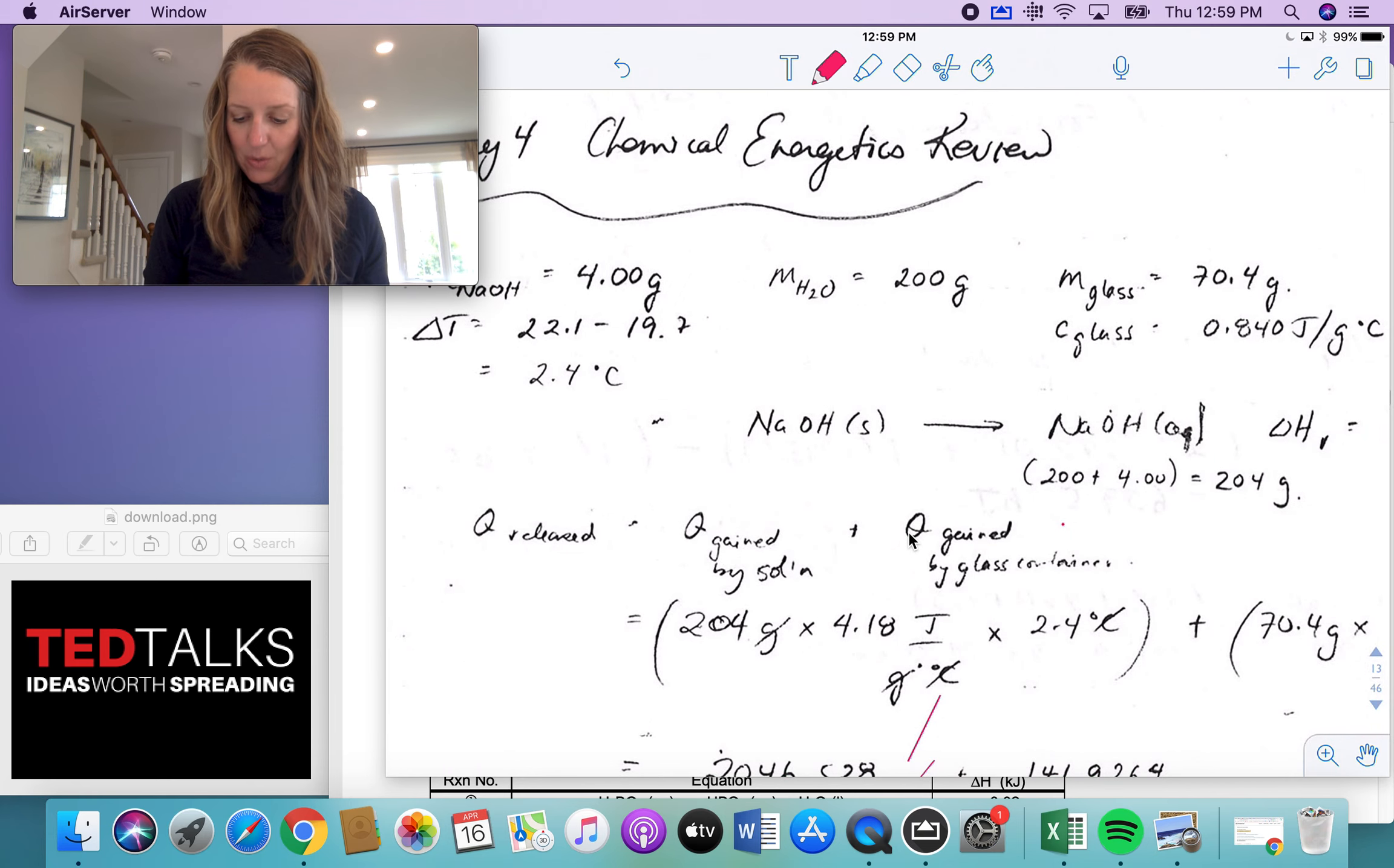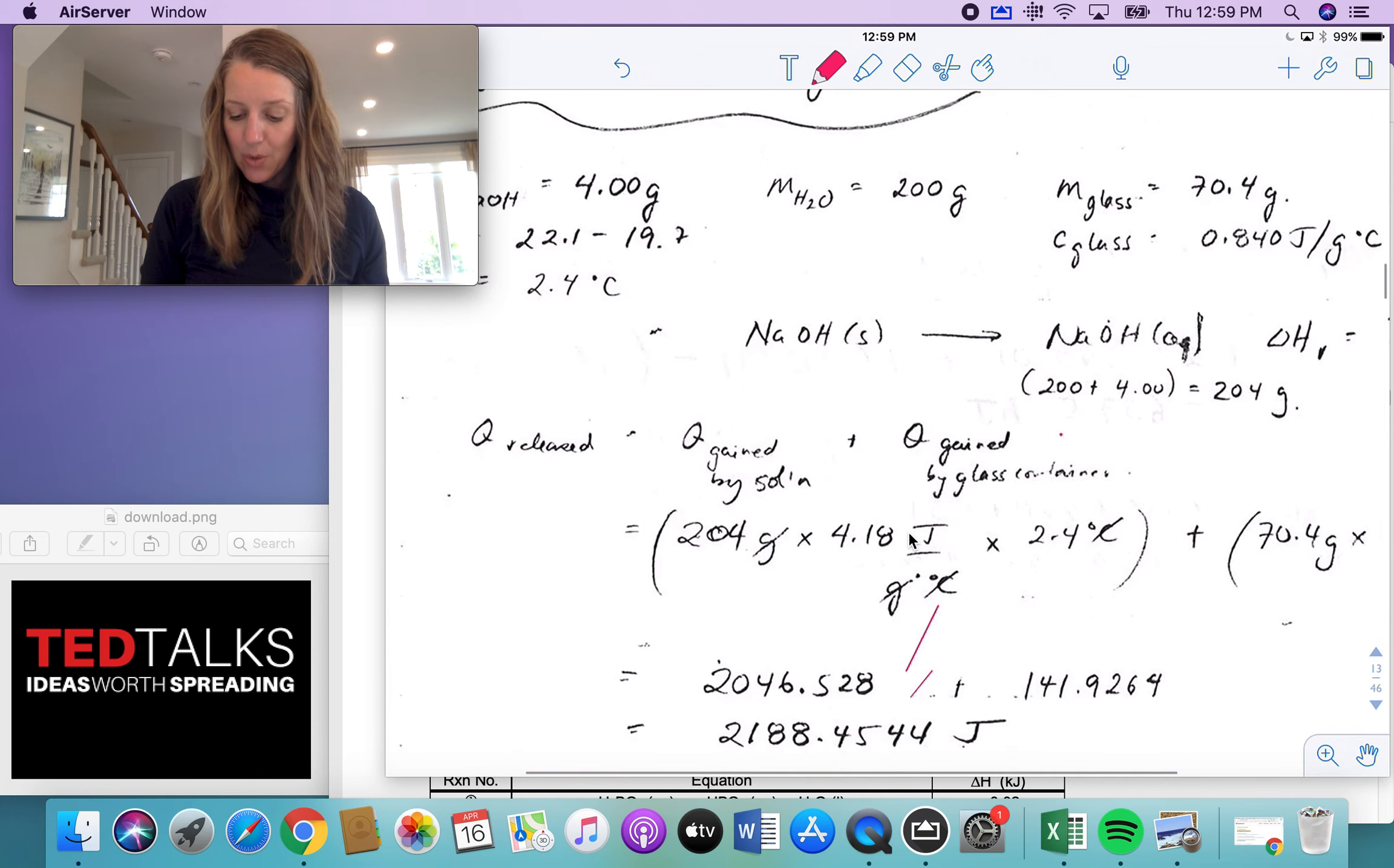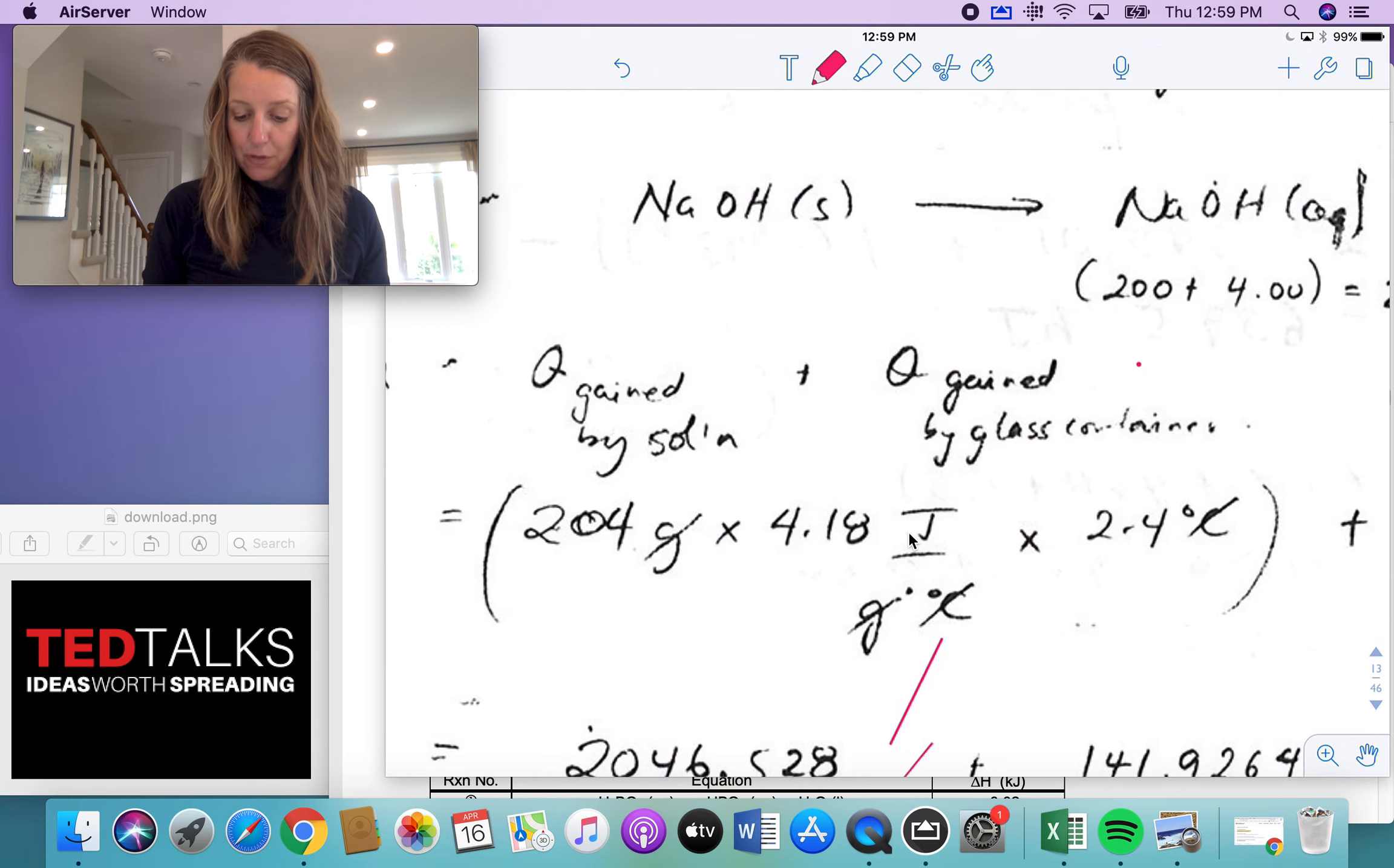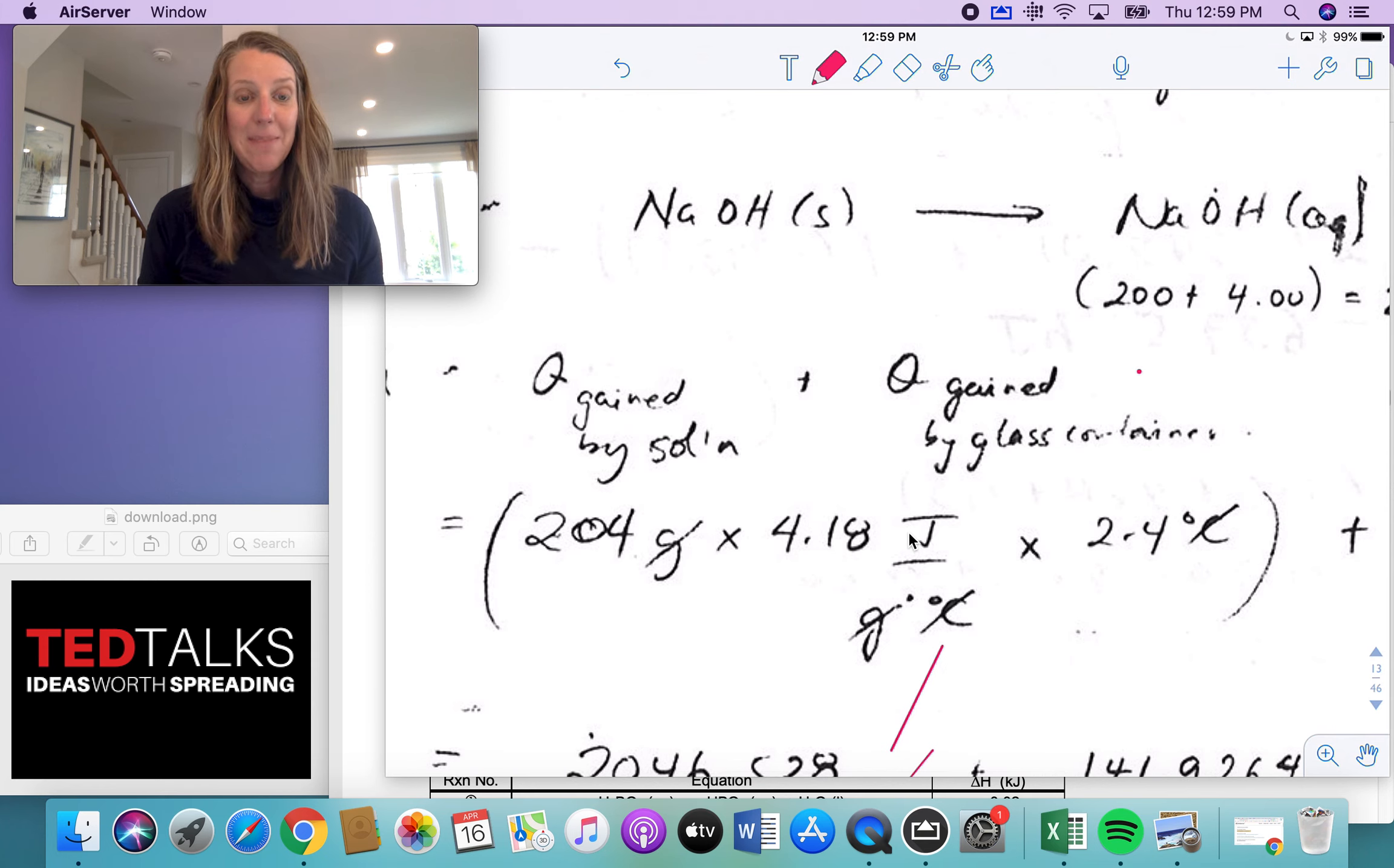We've got our mass of the water. We're given our mass of the glass and we know the specific heat capacity of glass that was given to us and so all we need to do is we can simply add the two enthalpies together. So for the enthalpy of the solution we're taking the mass of the water which was 200 grams plus the four grams of the sodium hydroxide. Specific heat capacity of water is 4.18 joules per gram degree Celsius and our temperature change is 2.4 degrees. We know that that was exothermic. We can factor that negative in at the end.